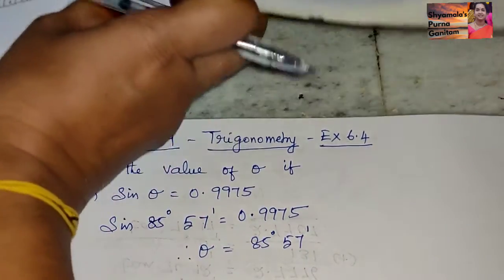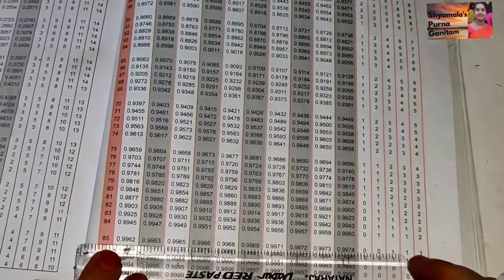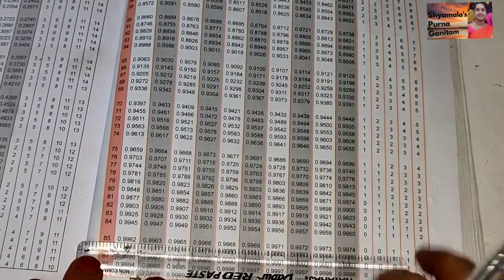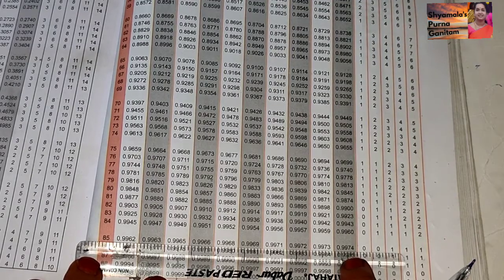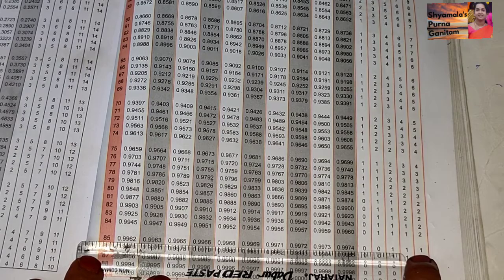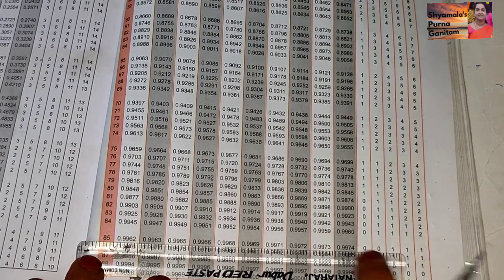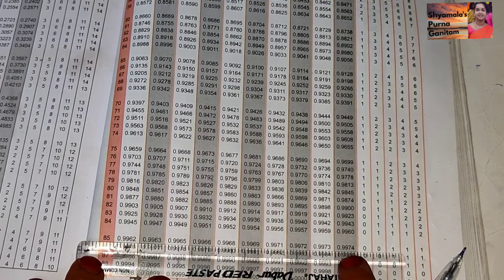So like this we need to check from the sine table. This is the sine table. For 85 degrees and 54 minutes we are getting 9974. So if we add 5 minutes with this, we will get 85 degrees 59 minutes, and we will get the value of 0.9975.